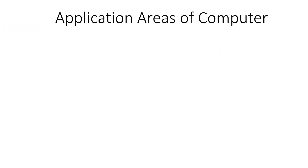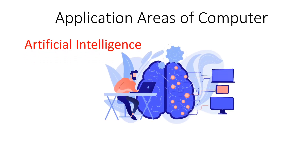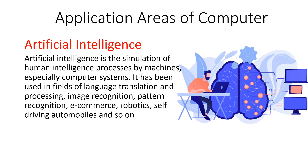Finally, I'll explain about the application of computer in the artificial intelligence sector. Artificial intelligence is the simulation of human intelligence processes by machines, especially computer systems. It has been used in fields like language translation, image recognition, pattern recognition, e-commerce, robotics, and self-driving automobiles. Computers in the artificial intelligence sector have made the world more advanced and automated.